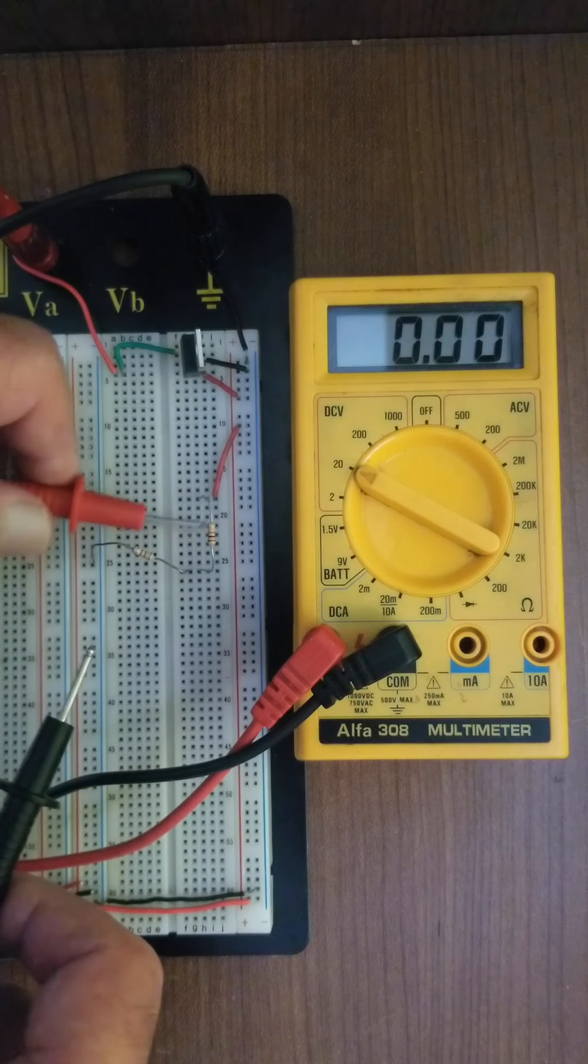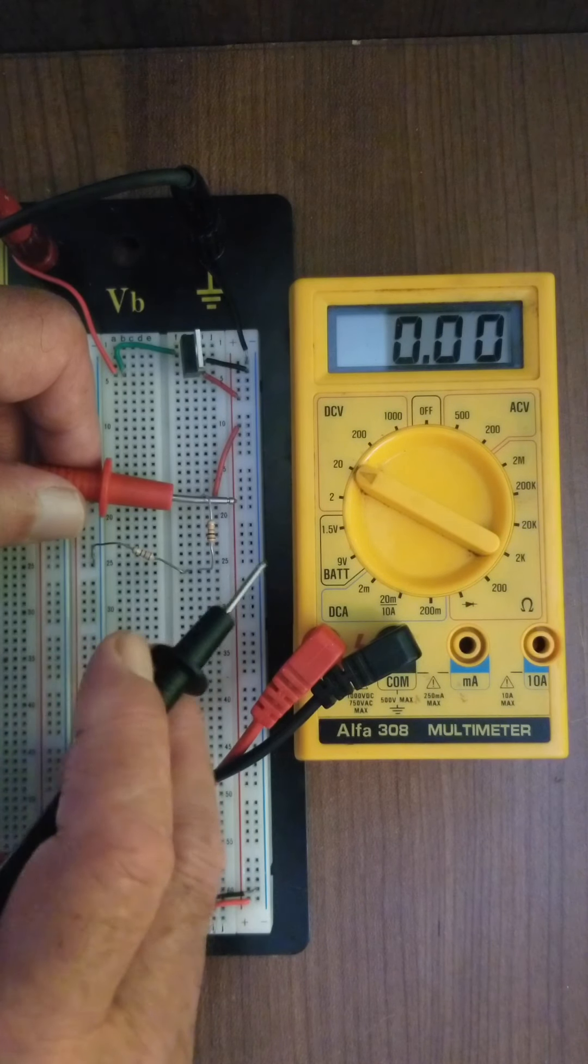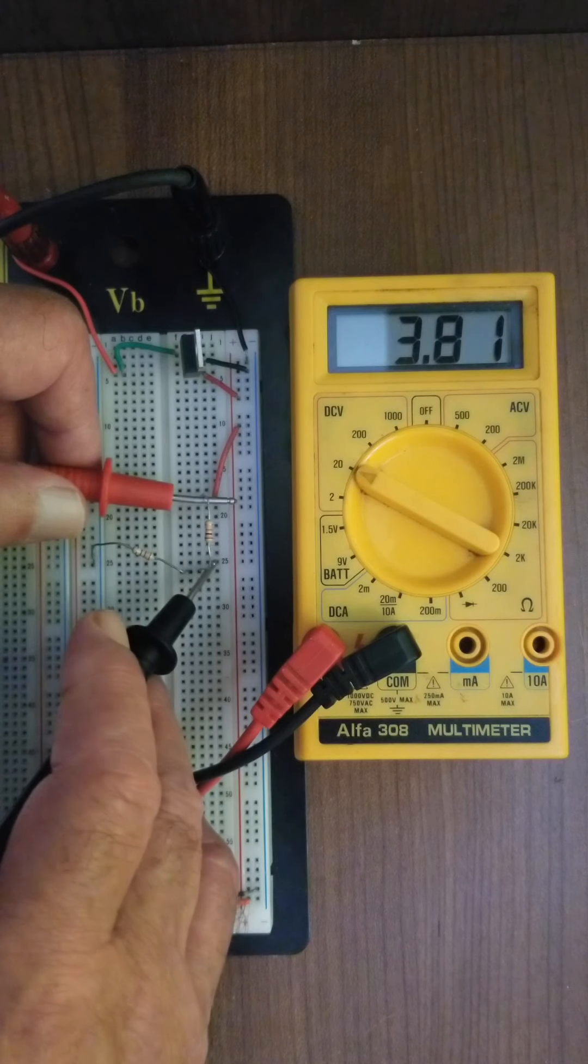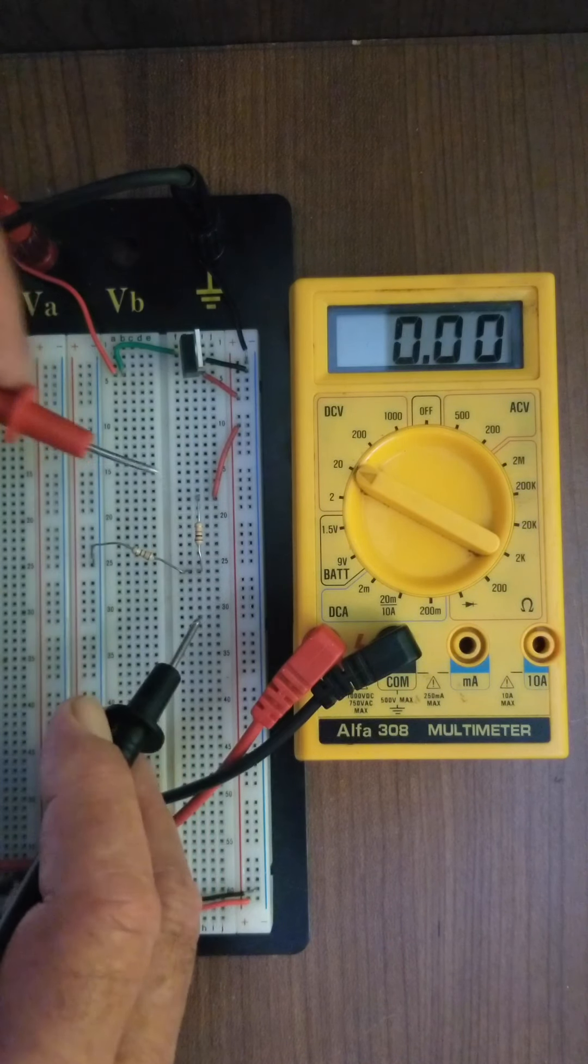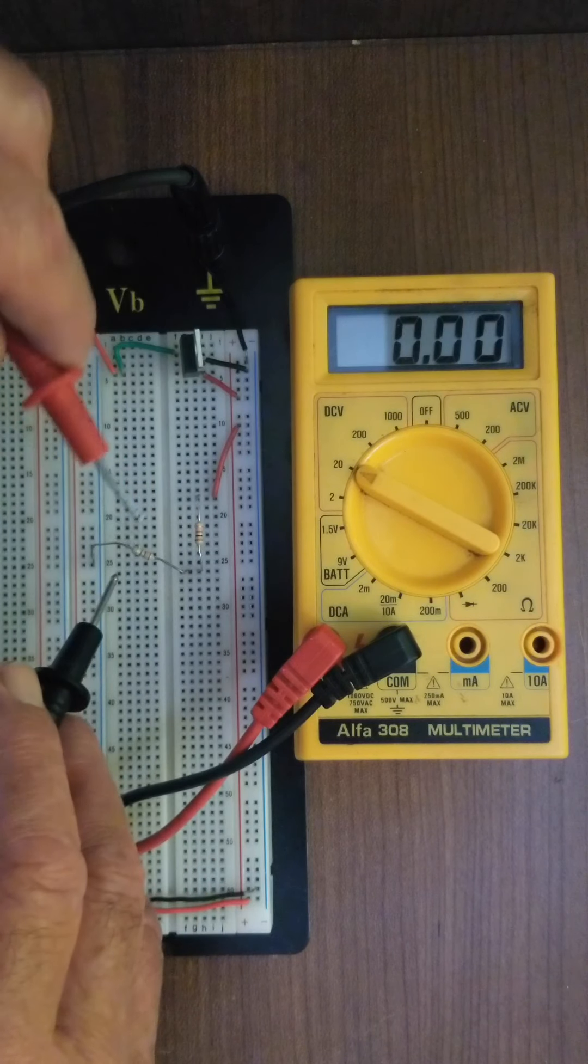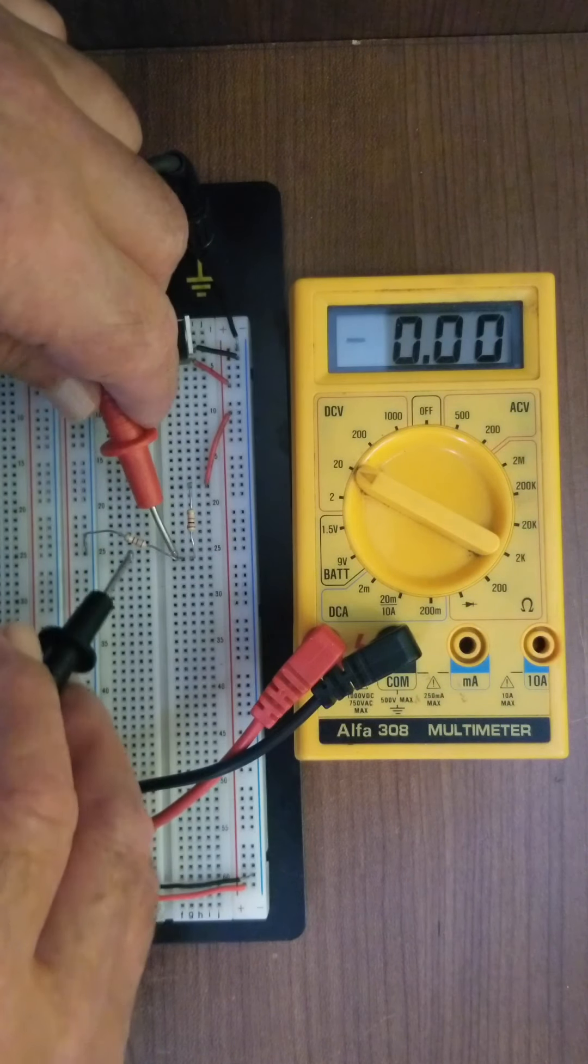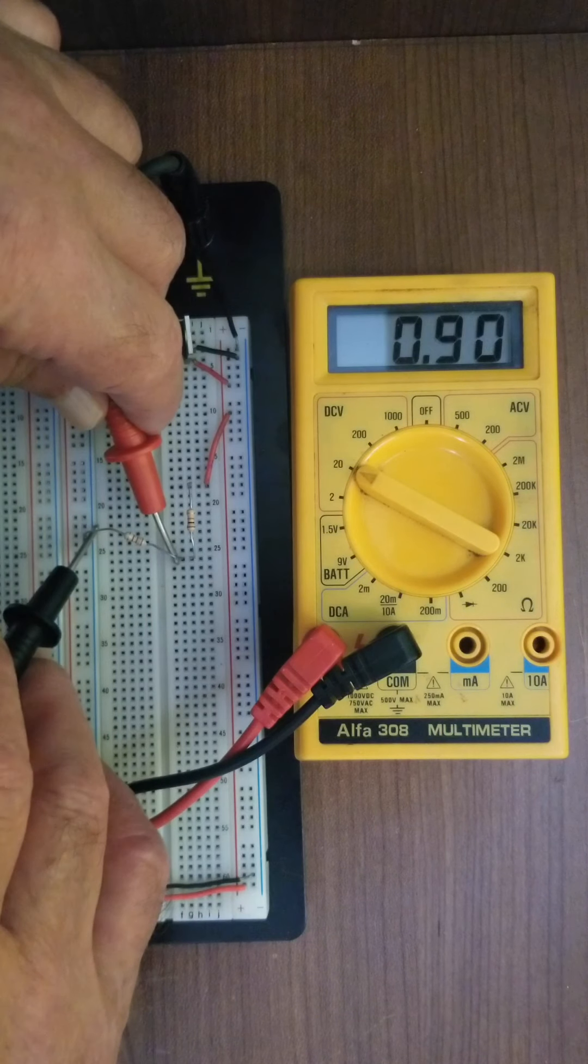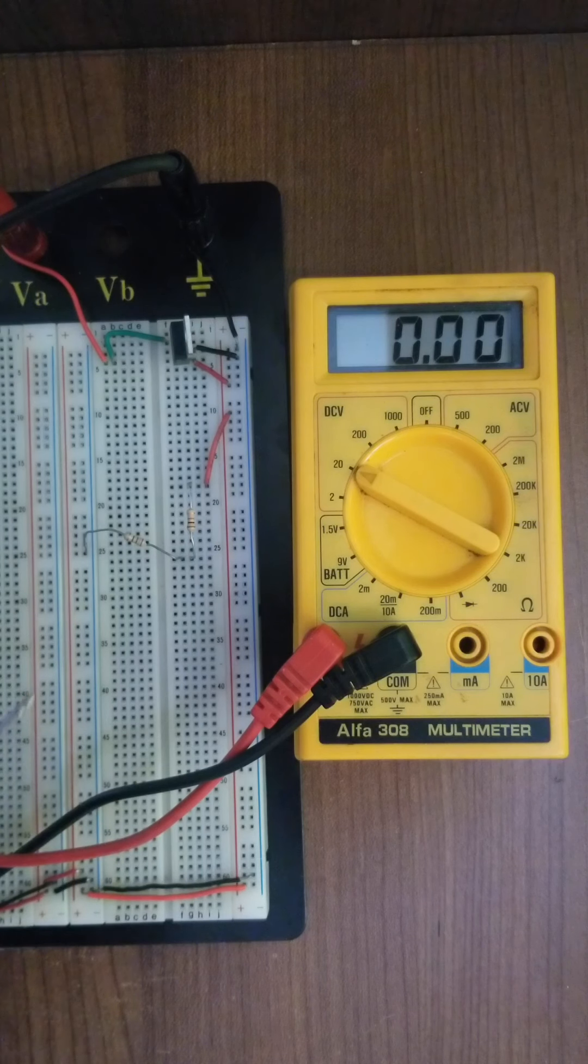And so when measuring the voltage across R1 we see about 4.1 volts and when we measure the voltage across R2 we see about 0.91 volts. Theoretically if you add the two voltages together you will find the voltage of the battery.